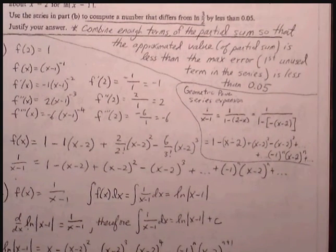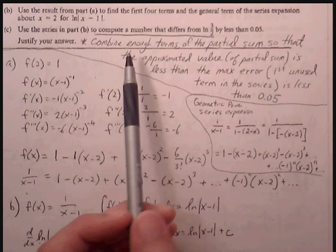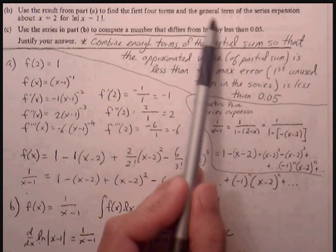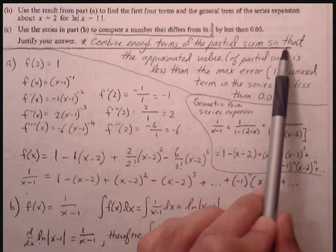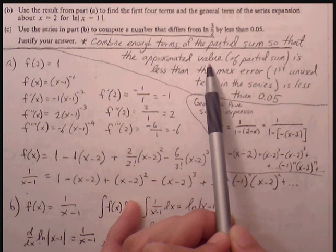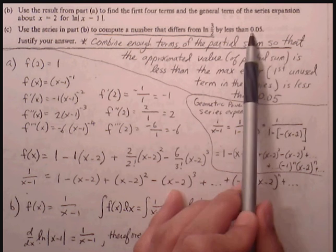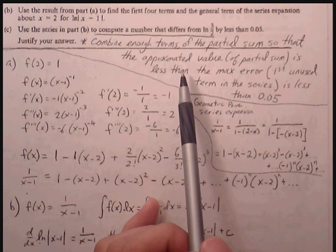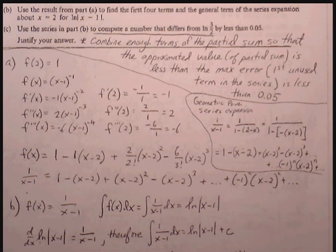Part C says: use the series in Part B to compute a number that differs from ln(3/2) by less than 0.05. We want to create the polynomial expansion of ln(3/2), but we want enough terms from the partial sum so that our approximation is going to be off by no more than the maximum error of 0.05.